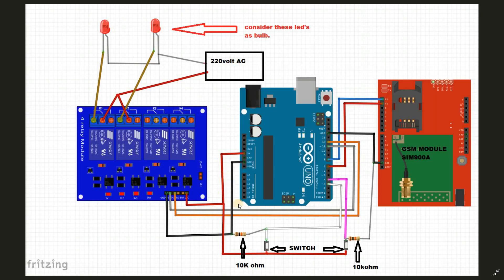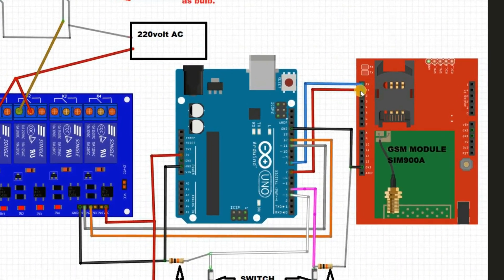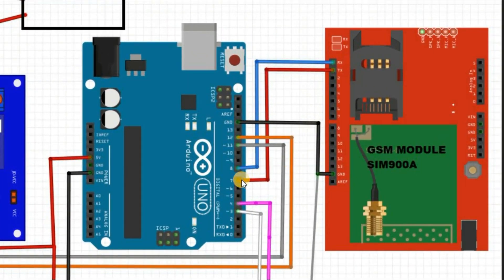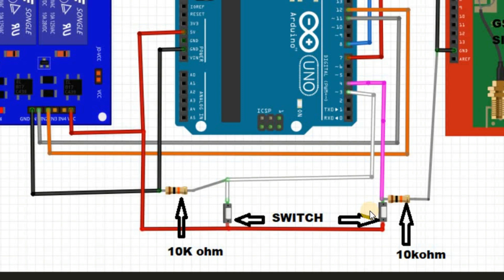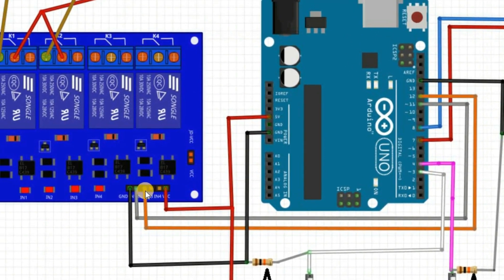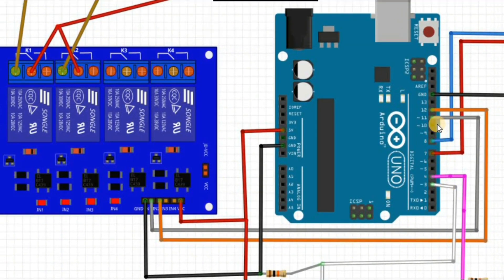This is the circuit diagram for our project — you have to connect all the components in this manner. The TX pin of the GSM module is connected to pin number 7 of Arduino Uno, and the RX pin of the GSM module is connected to Arduino pin number 8, and ground is connected to the ground of Arduino. These two resistances are used as pull-down resistances, and these switches are connected to pin number 3 and pin number 4 of Arduino, and the relay is connected to pin number 11 and pin number 12 of Arduino.